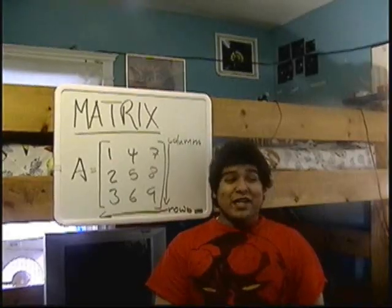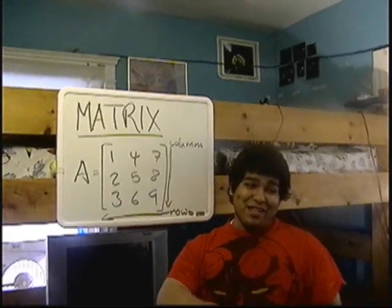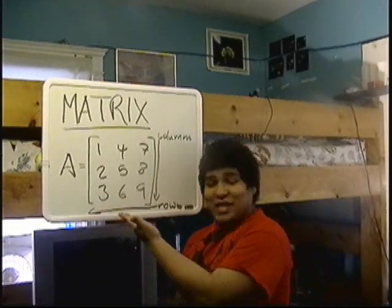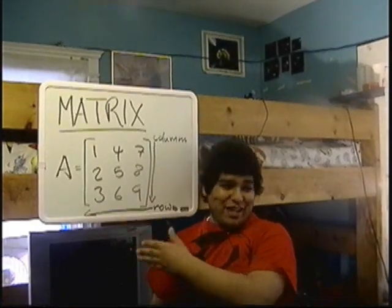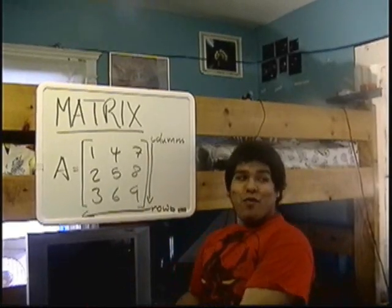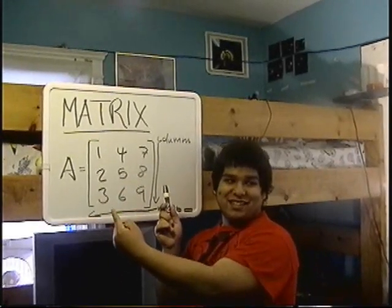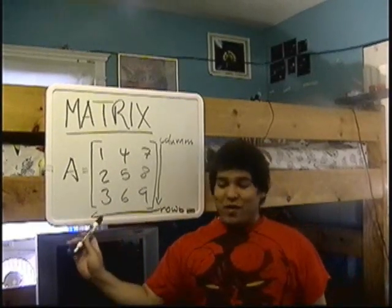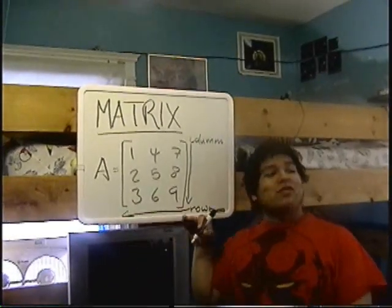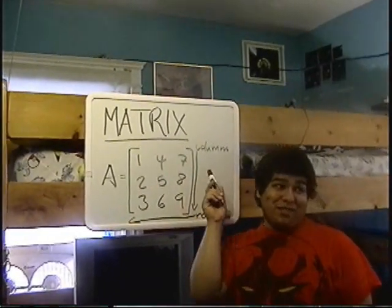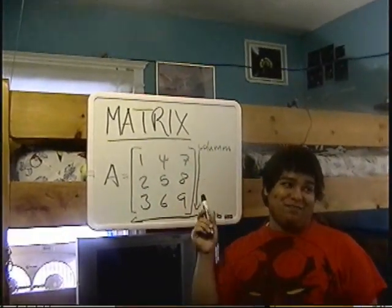The next word is matrix. A matrix is a rectangular array of numbers written within brackets. The numbers going horizontally are your rows; the numbers going up and down are your columns. A student asks if it's like the movie.